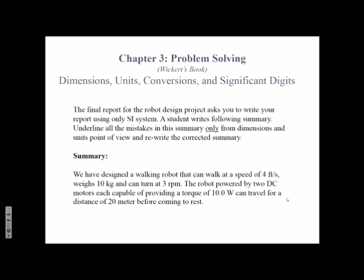This is a question from last year's exam. The final report for the robot design project asks you to write your report using only SI system of units. A student writes the following summary. What you have to do is underline all the mistakes in the summary only from dimensions and units point of view, and rewrite the corrected summary. The student wrote: 'We have designed a walking robot that can walk at a speed of 4 feet per second, weighs 10 kilograms, and can turn at 3 rpm.'